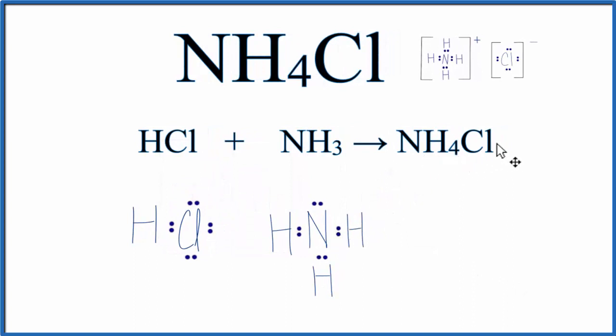So when we form NH4Cl, we have HCl plus NH3. What happens is this hydrogen here, it breaks away and now it has a positive charge. That's because it left one of its electrons here with the chlorine. That now has a negative charge.